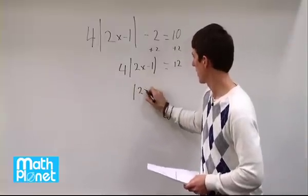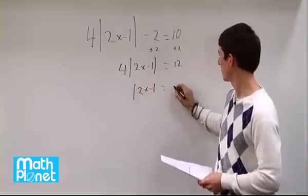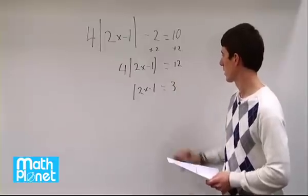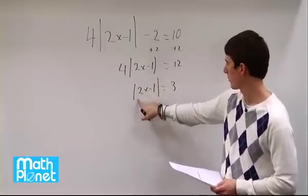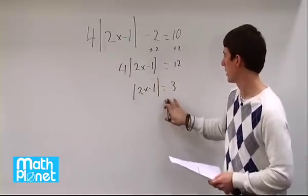So 2x minus 1 equals 12 divided by 4 is just 3. So we have absolute value 2x minus 1 equals 3.